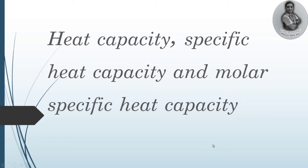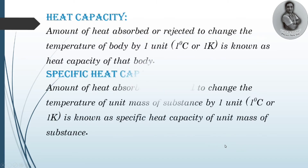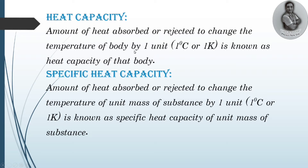Let me explain the heat capacity definition first. Heat capacity is applicable for the body, whereas specific heat capacity is applicable for the unit mass of a substance. Heat capacity means the amount of heat absorbed or rejected to change the temperature of a body by one unit — that is one degree Celsius or one Kelvin — is known as the heat capacity of that body.